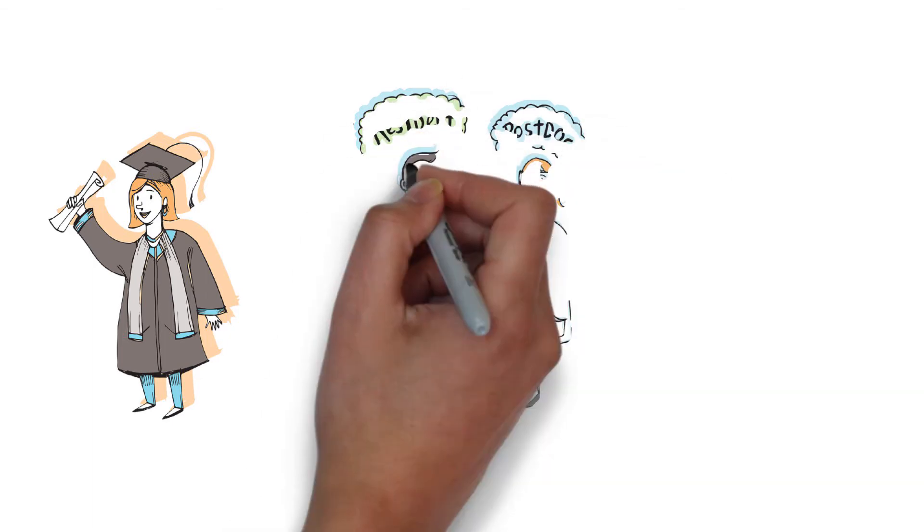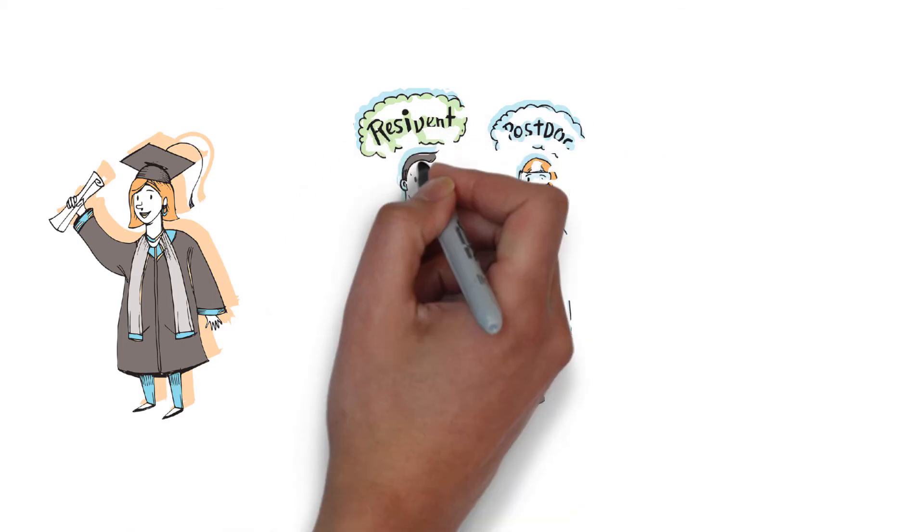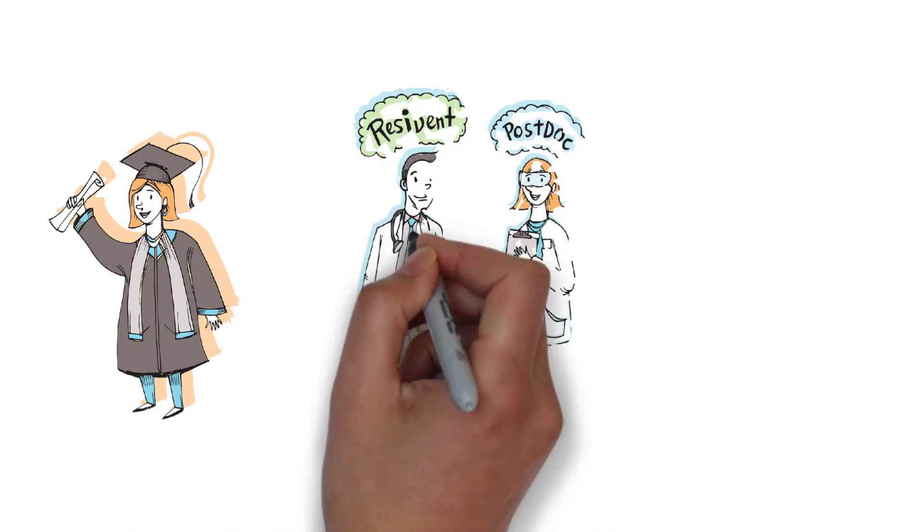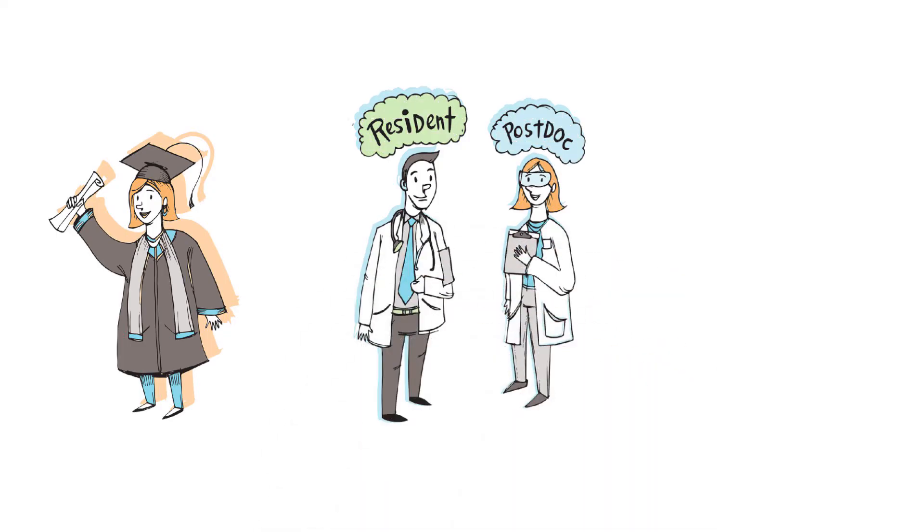The process to becoming an independent scientist is similar to becoming a physician. Physicians go to medical school to earn their MD and then complete additional training, called a residency, before they are qualified to practice medicine independently.